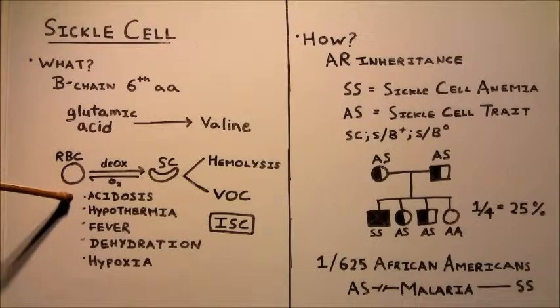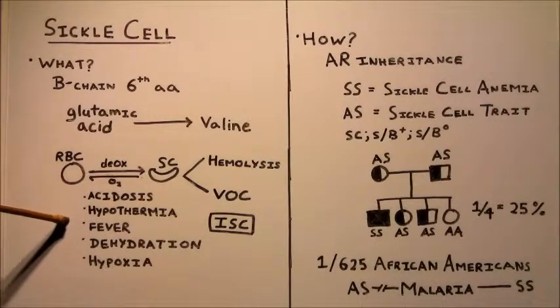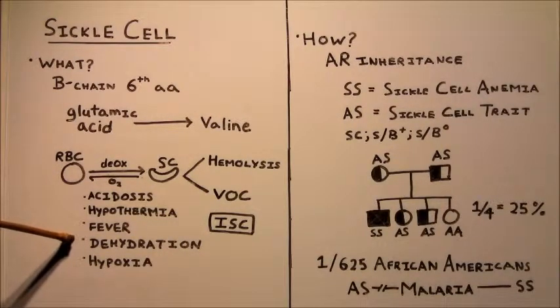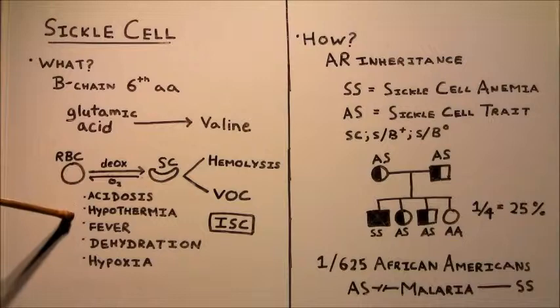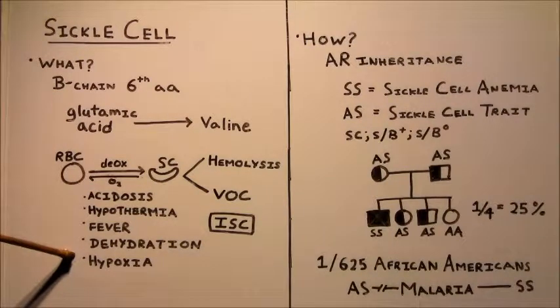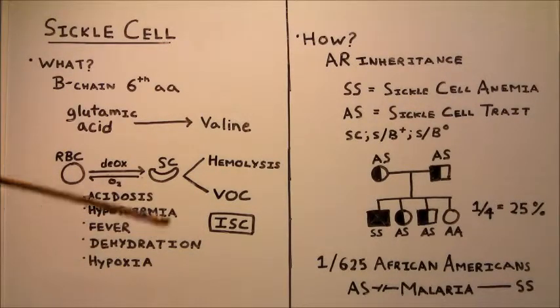So acidosis, hypothermia, fever, dehydration, and hypoxia or a low oxygen count. And all of these can increase the sickling of red blood cells in a deoxygenated state.